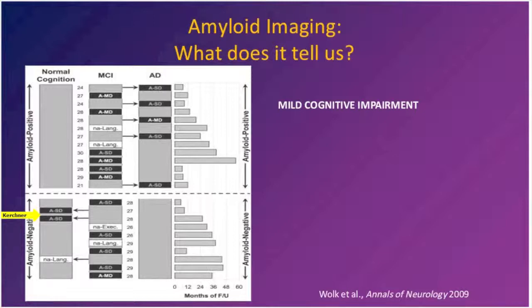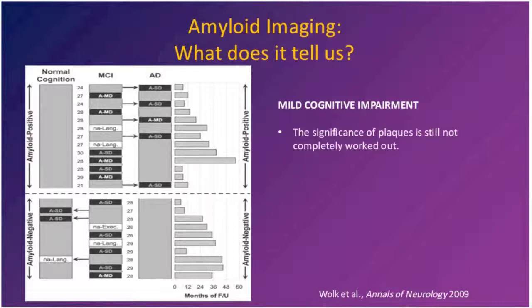Many amyloid-positive MCI patients remained mildly cognitively impaired at follow-up and had not converted, so while it's certainly worse to have an amyloid positive scan — since it puts you at greater risk of converting to a diagnosis of fully developed dementia — it's not necessarily a death sentence. Many studies have followed patients for years with a number who stay mildly impaired and don't seem to progress. The significance of having plaques in the brain is not completely worked out. It's better to have a negative amyloid PET scan, but if you do have a positive scan, it's not clear how bad the prognosis is.